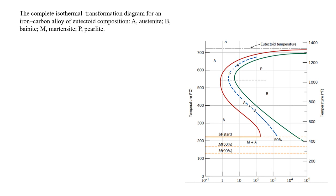The complete isothermal transformation diagram for an iron-carbide alloy of eutectoid composition is shown: A for austenite, B for bainite, M for martensite, and P for pearlite. The eutectoid temperature is shown, with the austenite region labeled A. The 50% transformation line from austenite to pearlite is shown, along with where transformation begins and where transformation ends.